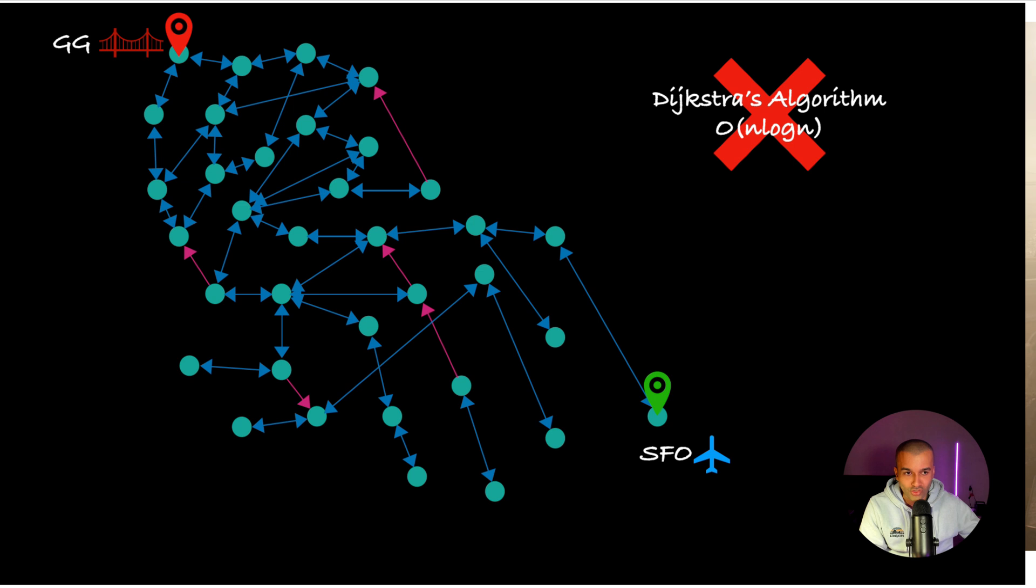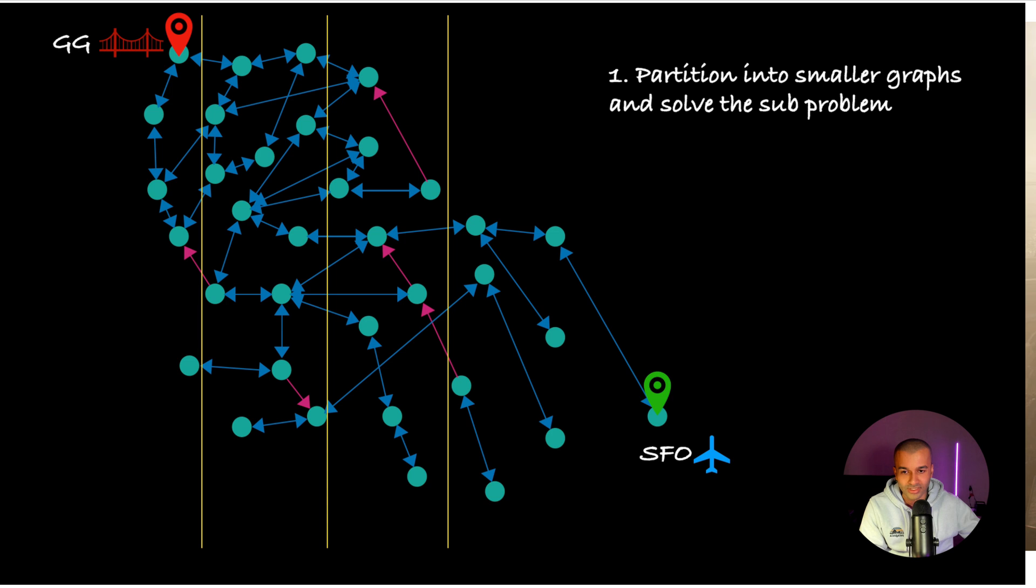San Francisco has more than a million road intersections, so that means we've got more than a million nodes to work with. So n log n is just not feasible where n is over a million. Instead, the smart engineers at Uber decided that they were going to partition this graph into smaller graphs and solve for the subproblems.